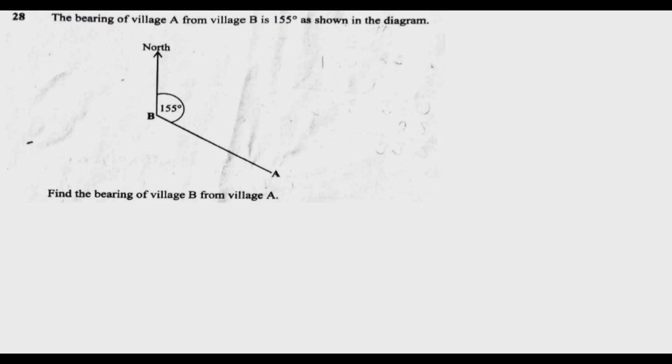Then we come to the actual question which is find the bearing of village B from village A. So what we need to do first, we come to point A and draw a north line going upwards.